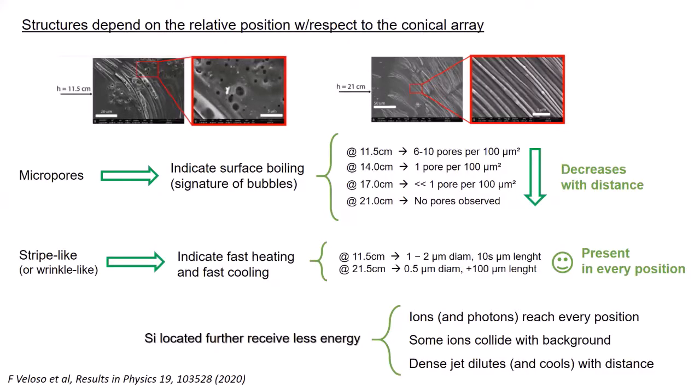If we compare the structures depending on the relative position to the conical wire arrays, we can see that the presence of micropores decreases in abundance with distance. It varies from 6 to 10 pores per 100 micrometers square at 11 centimeters to almost no pore observed at 21 centimeters. The presence of these micropores is ascribed to surface boiling as a signature of bubbles being produced on it.